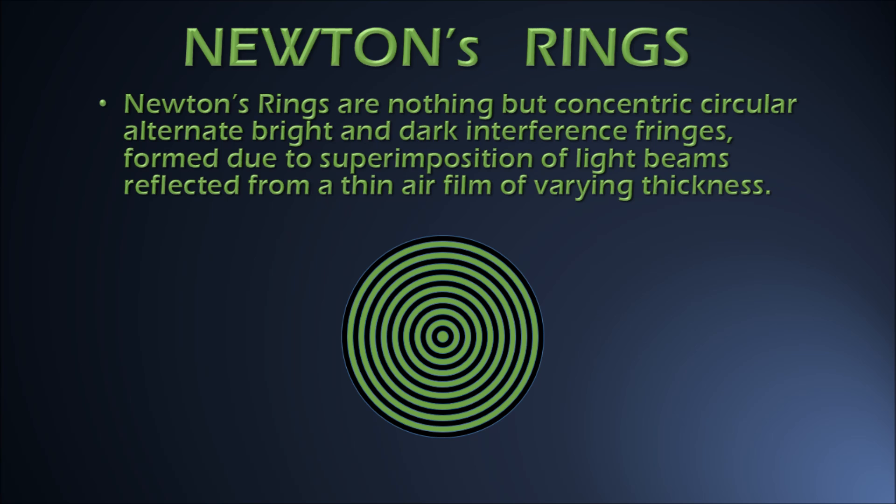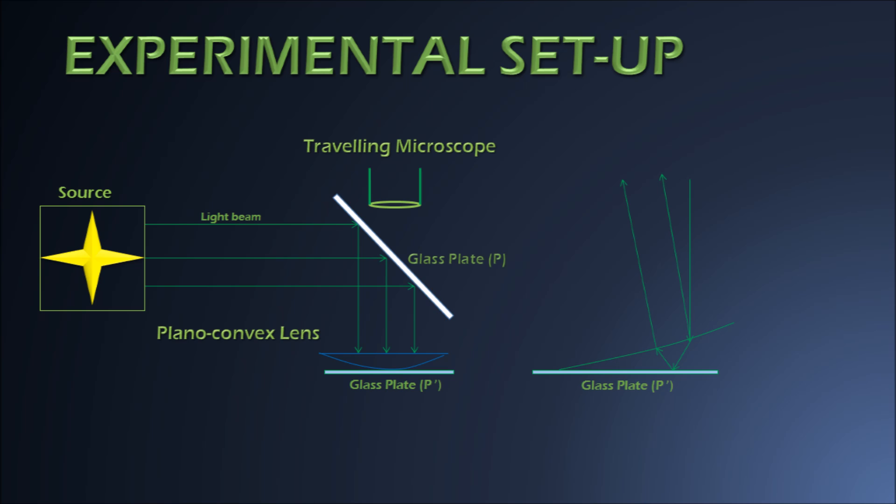In the next slide I will explain how these Newton's rings are formed and what apparatus is used. The apparatus is very simple — it consists of a plano-convex lens placed on a glass plate P'. Another glass plate is held above this at an angle of 45 degrees to the horizontal, and we use a traveling microscope to view the Newton's rings formed.